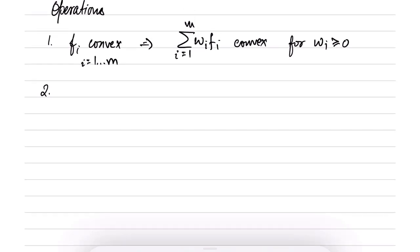The simplest verification is: if you take the Hessian of f_i, then the Hessian of the positively weighted sum would also be positive semi-definite, if each of the individual Hessians are positive semi-definite.